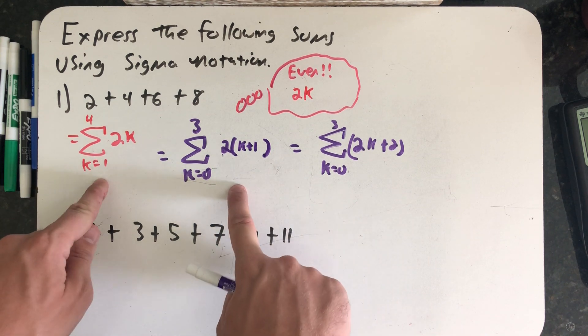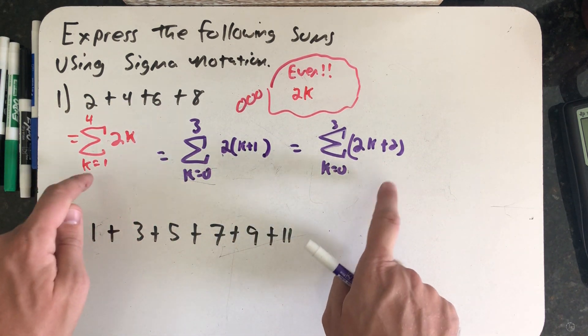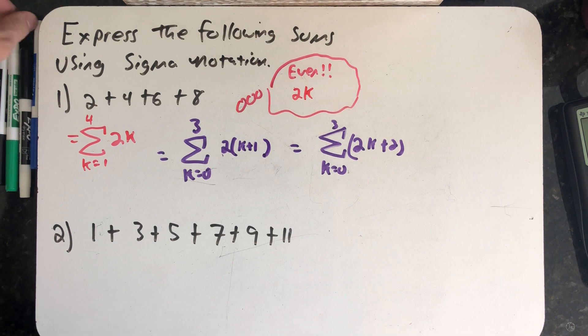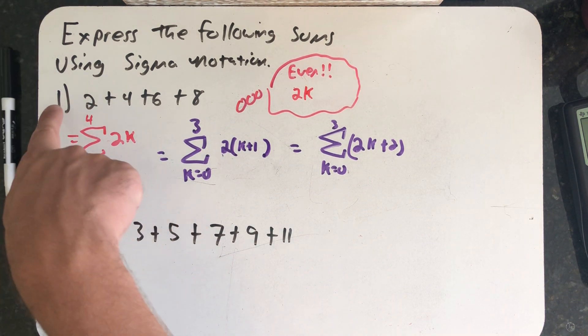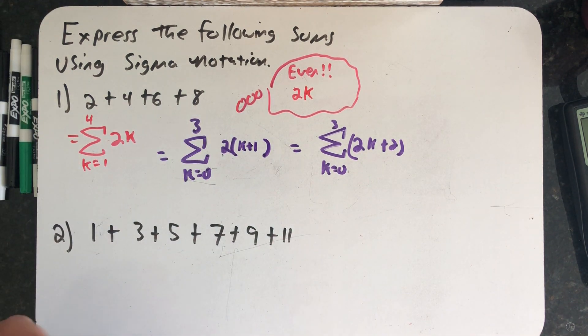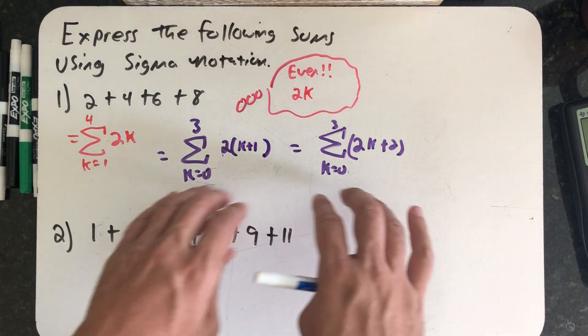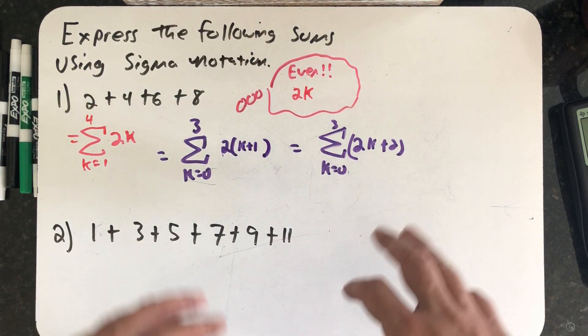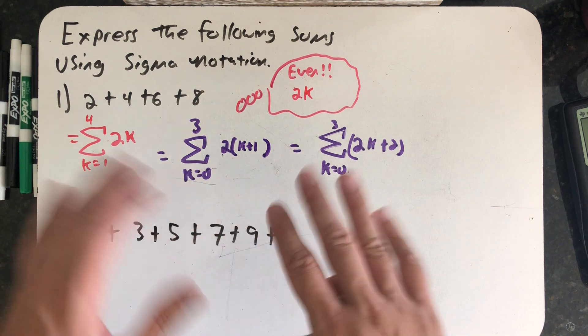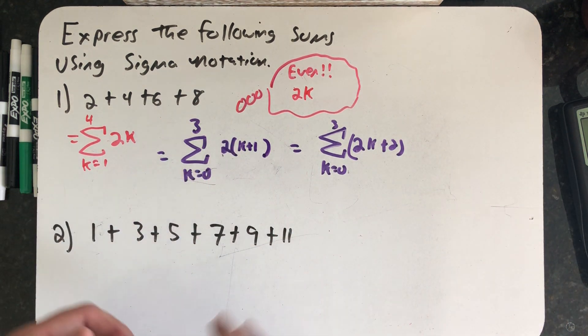And so what I've done now is I've re-indexed this sum. I have two different ways of writing down this sum in sigma notation. And one of the big things to learn from this is if someone just writes out a list of numbers and says write this in sigma notation, there's actually very many different ways of writing it down. In fact, you could start the index anywhere you want it.